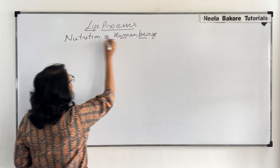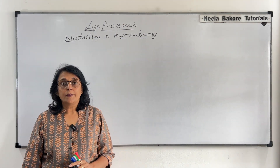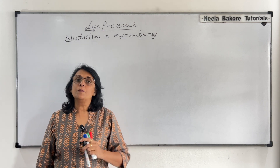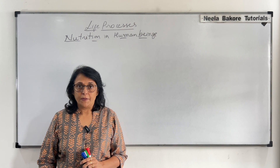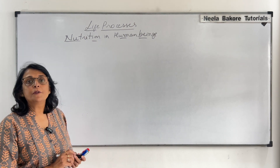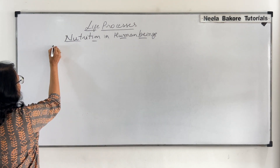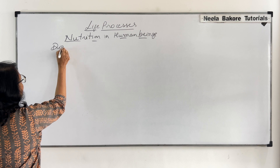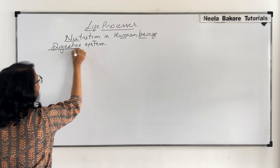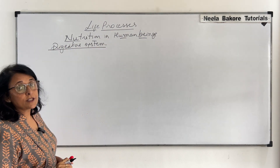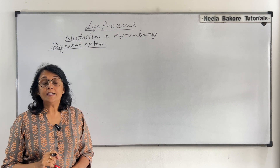In human beings, to take the nourishment or take the food, then chew it, to digest it and to absorb it, there are different parts and those parts make the complete digestive system. We will first take up different parts of the digestive system and then try to draw various parts. We will talk about various parts as well as the glands, because these glands are very important.